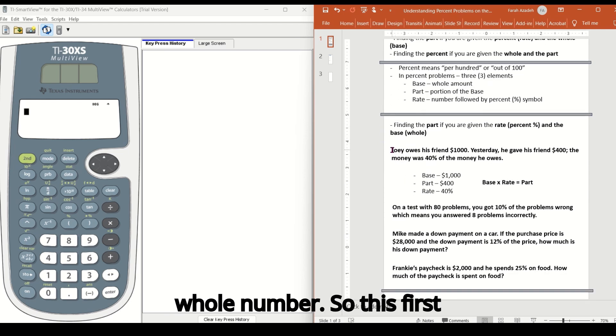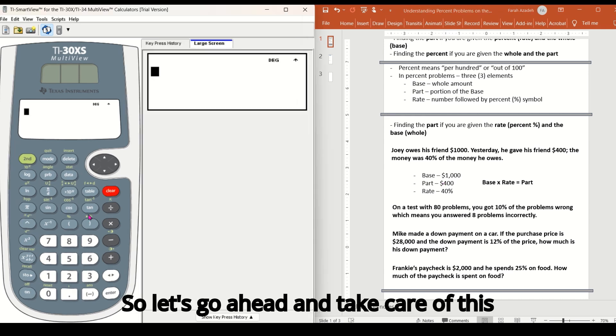So this first problem says, Joey owes his friend $1,000. Yesterday he gave his friend $400. The money, the $400 was 40% of the money he owes. So the base is a thousand, the part is 400, and the rate is 40% because 40% of a thousand dollars is 400. So let's go ahead and take care of this first example.